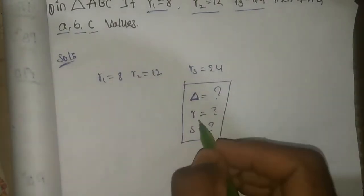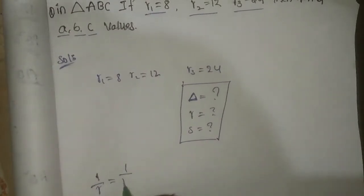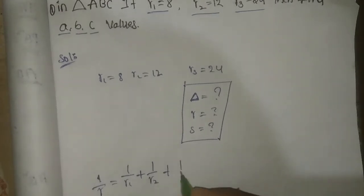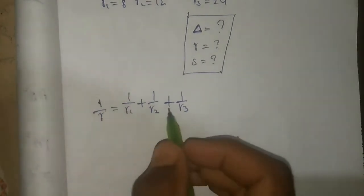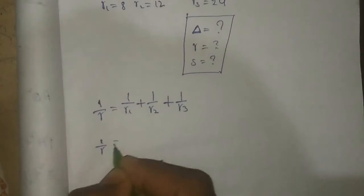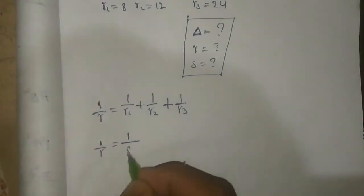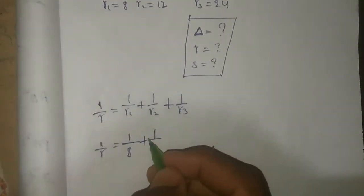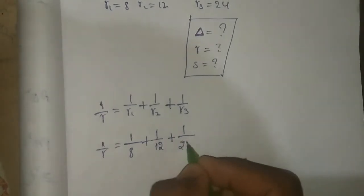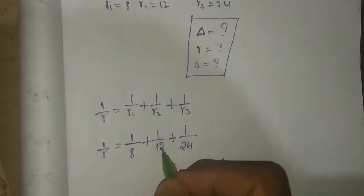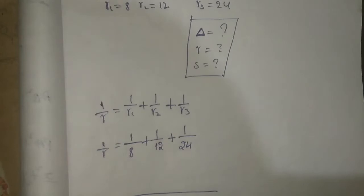To find the R value, there is one formula: 1/R = 1/R1 + 1/R2 + 1/R3. So substituting, that is 1/8 + 1/12 + 1/24. We have to find the LCM, and the LCM is the highest number, that is 24.